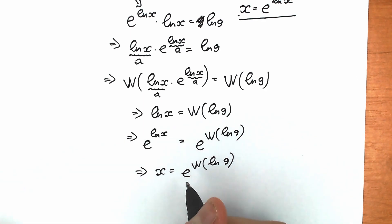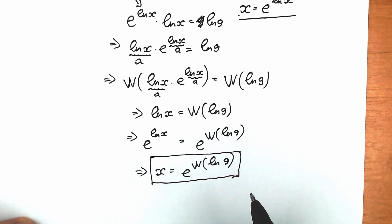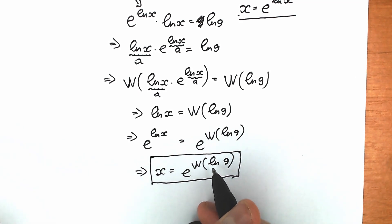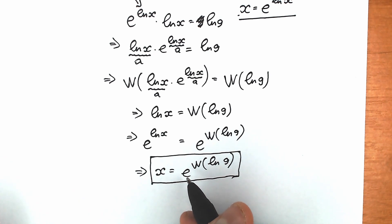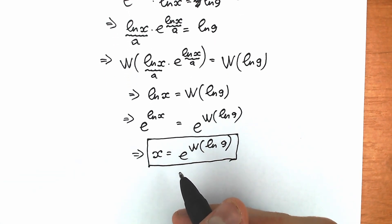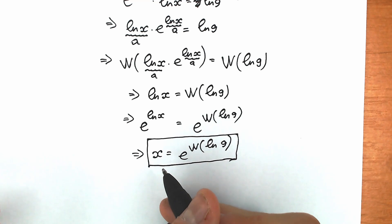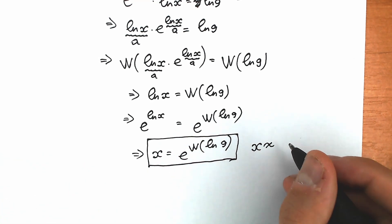Don't be scared about this expression. This is our answer. Natural log 9 is a constant, Lambert W of a constant is also a constant, and e is our well-known constant. So constant to the power constant equals a constant. You may be confused because you don't know the exact numerical value of x.